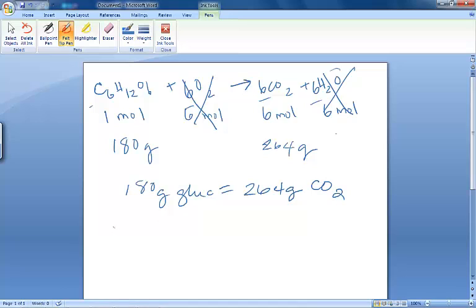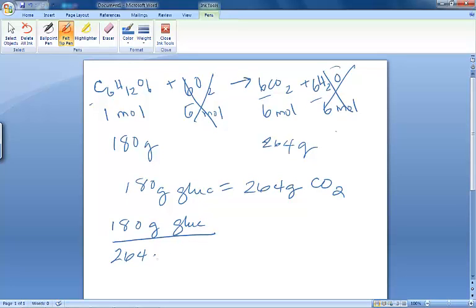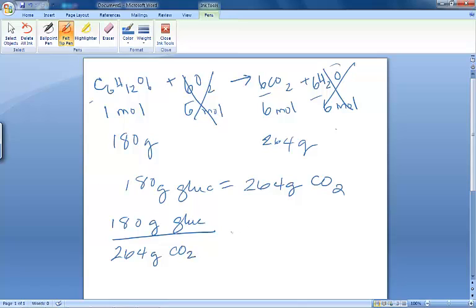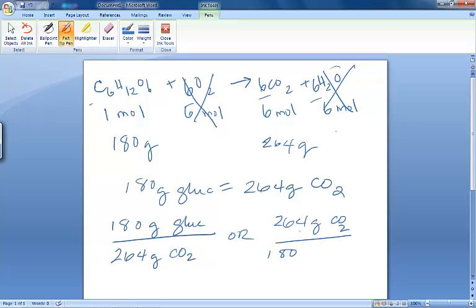So 180 grams of glucose is equivalent to 264 grams of carbon dioxide produced. So we can write that as a fraction. 180 grams of glucose that's combusted or reacted will produce 264 grams of CO2. Or you could put the 264 grams of CO2 on top and the 180 grams of glucose on the bottom. So this is a nice way to not only be able to read and understand what your chemical equation is telling you, but also to get all the numbers that you need. Now let's take these values here that we've used. This 180 is equal to 264, and let's actually solve a problem with it.